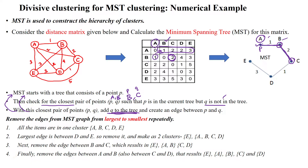C is not yet in the tree, so we establish the edge to C and it is connected into the tree. We repeat this — from C, the minimum edge is 1. We establish the edge to D, and D is also connected into the tree.